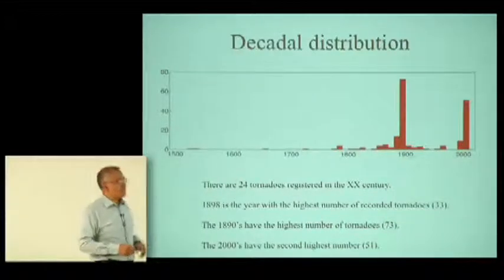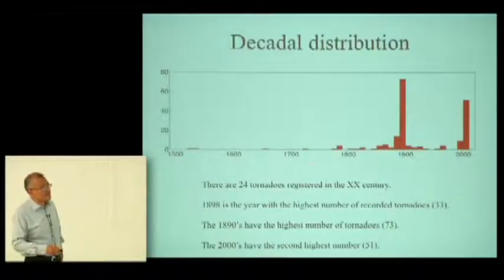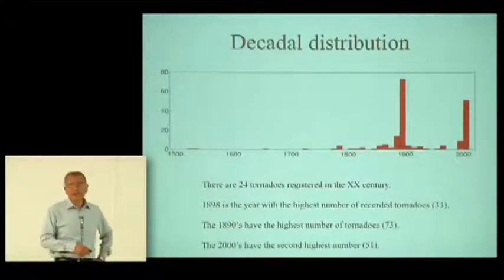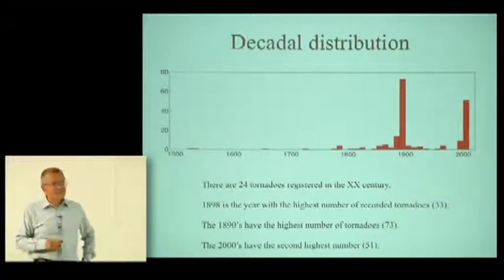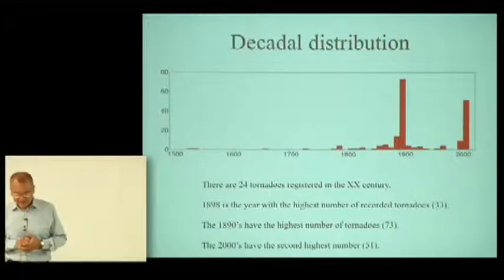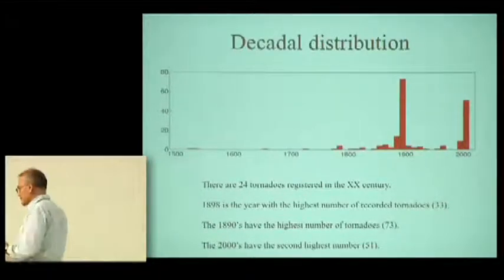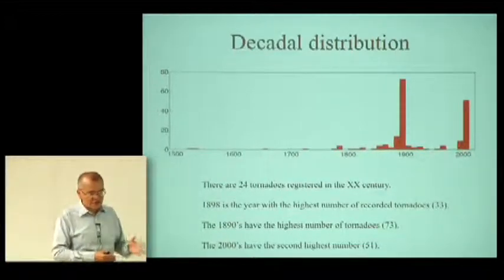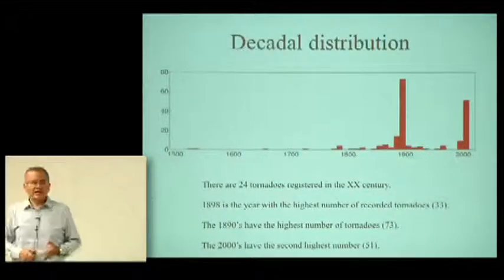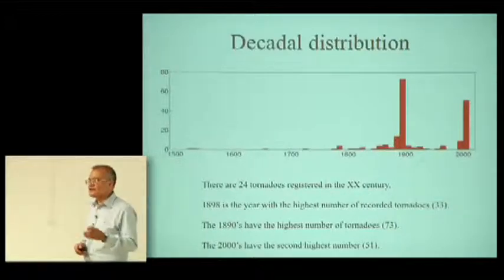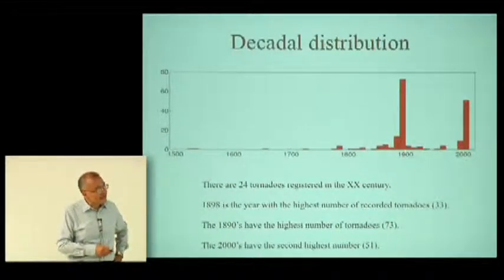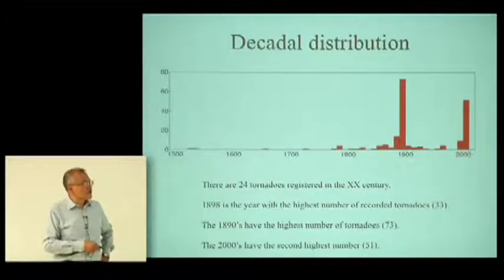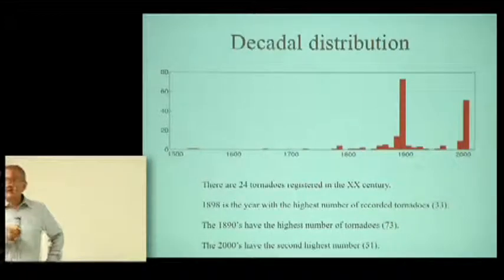This is the distribution in time of the tornadoes — the x-axis is year from 1500 to 2000, and the y-axis is the number of tornadoes. A few things are remarkable. If you look at climatologies of tornadoes in Europe — by country, in France, Germany, Italy — you always see more tornadoes in the present than in the past. Mexico is a singularity: the highest number of tornadoes I've compiled occurred in the last decade of the 19th century, in the 1890s. There are only 24 tornadoes identified in the 20th century.